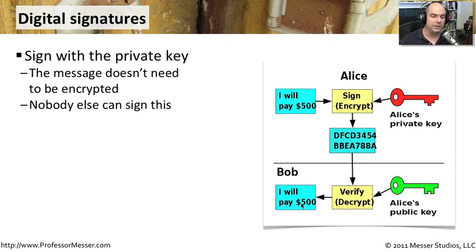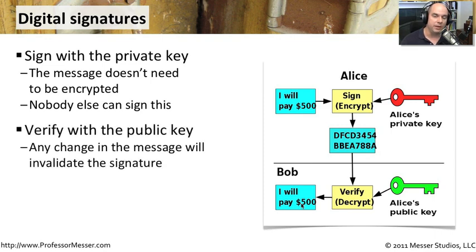If anything had been changed anywhere in the middle, Bob would have known it because the signature would not have verified properly. This allows us to do some very interesting things with non-repudiation — we can make sure that documents sent across the network are not changed and remain intact. We can combine this encryption process with the digital signature process to ensure the integrity of the files we're sending matches when they arrive on the other side.